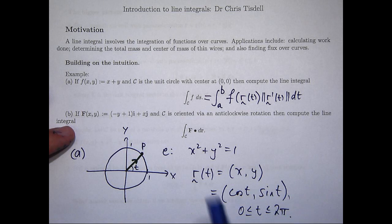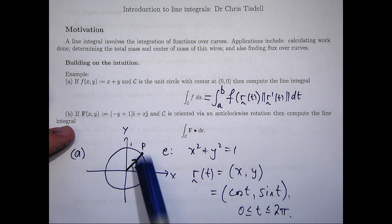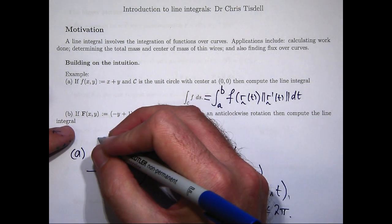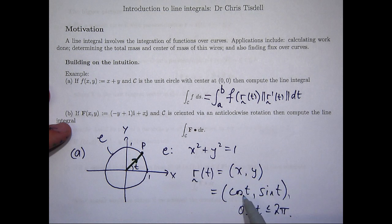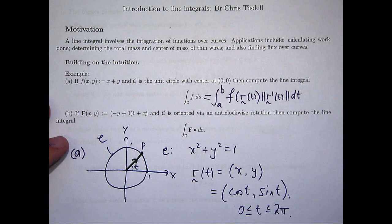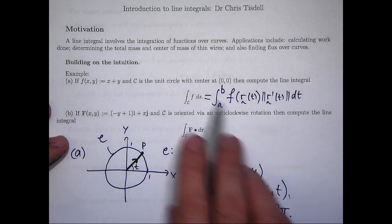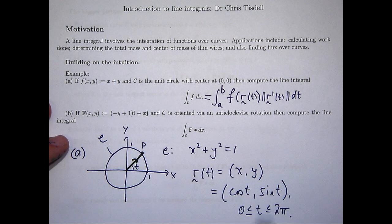Okay, so this vector function parameterizes or describes the curve under consideration. Now, to verify that, of course, you can start with this and go, okay, well, let x equal cos t, y equal sin t, and show that the equation holds. Okay, well, you can see up here that a and b would be my limits of integration on my t. So, a would be 0, and b would be 2π.